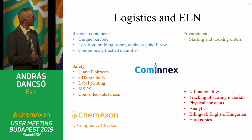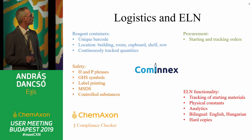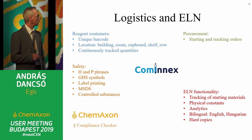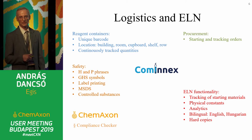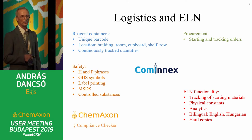There is also alphanumeric data functionality. The database handles reagent containers — every container has a unique barcode, location is stored, and quantities are tracked continuously. There is a procurement system; safety data are stored including H and P phrases, GHS symbols, label printing functionality, and MSDS sheets. There are also controlled substances, and ChemAxon has a special service called Compliance Checker — you can check for a compound whether some legal restriction exists.